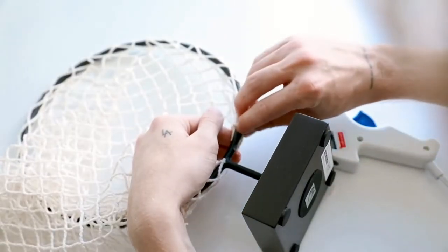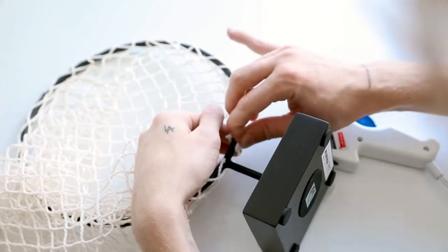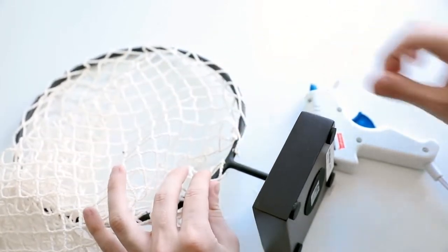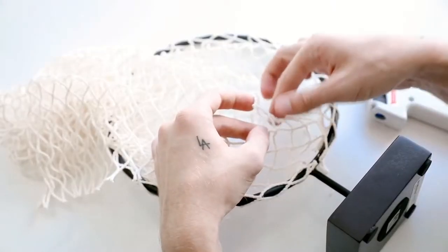Once it is completely attached, I just glued the start and the finish kind of up towards the base of the basketball hoop.